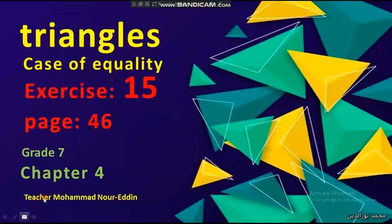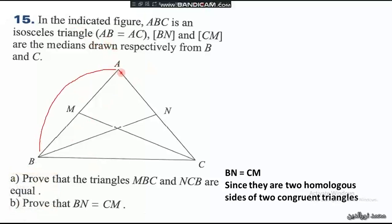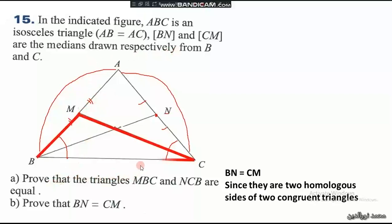Exercise 15 on page 46. In the indicated figure, ABC is an isosceles triangle such that side AB equals side AC, so the two angles ABC and ACB are the base angles and they are equal. BN and CM are the medians, so BN is the median meaning N is the midpoint of AC, and CM is the median meaning M is the midpoint of AB. We need to prove that the two triangles MBC and NCB are equal.